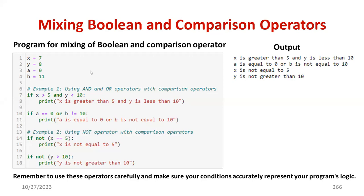For better understanding, there is a program with variables x, y, a, and b. In the first example, we are using the AND and OR operators with comparison operators and printing the result. In the second example, we are checking the NOT operator with the comparison operator and printing the result. We are also using a simple if condition. This combination of Boolean and comparison operators is really helpful for complex decision-making.